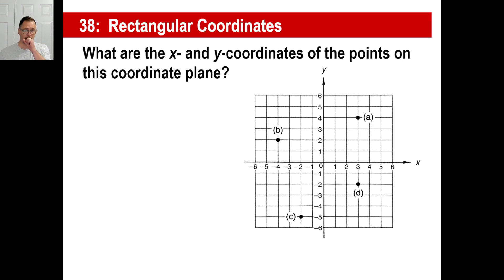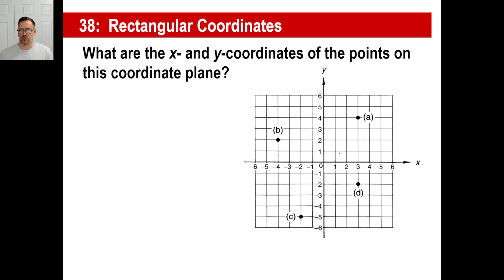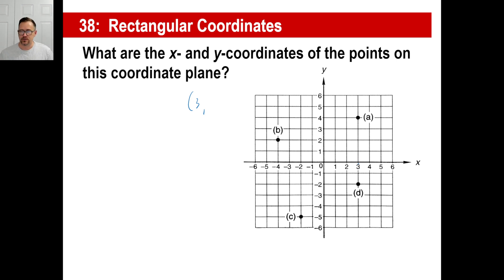Let's look at these points. What are the x and y coordinates of the points on this coordinate plane? Let's look at A first. To find it, we start at the origin — where the x-axis and y-axis meet — and go to the right: one, two, three. So the x-coordinate is 3. Then we need a second dimension — we go up: one, two, three, four. So it's (3, 4). X comes first alphabetically, then Y.